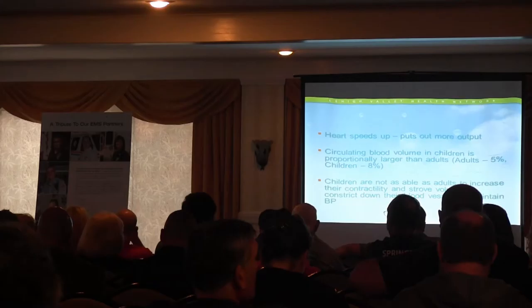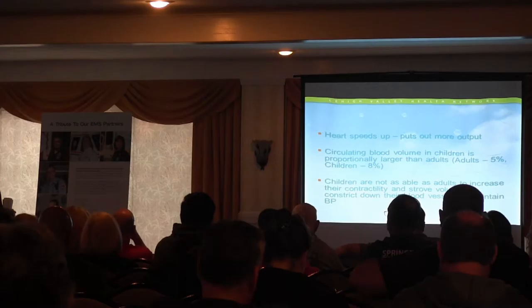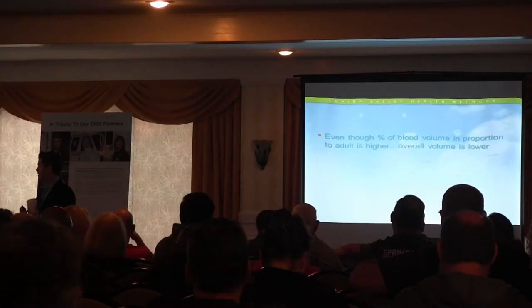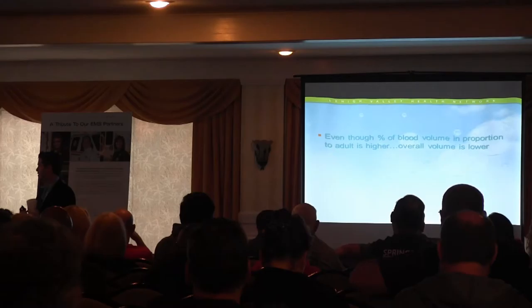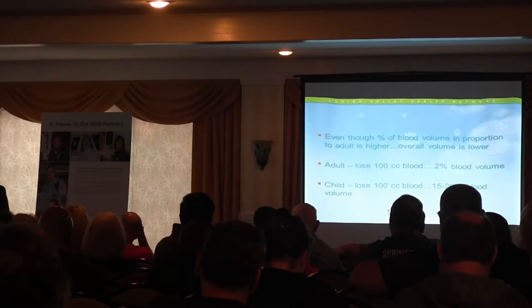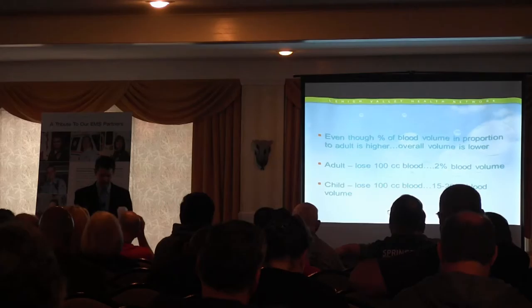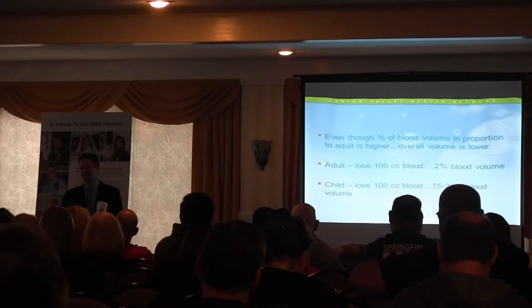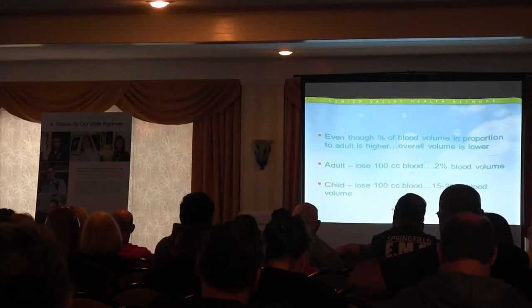In adults, blood pressure can be maintained through vasoconstriction even with some blood loss, but kids can't do that as easily. Also, even though kids have a higher blood volume percentage, the absolute volume is small. If an adult loses 100 cc of blood that's about 2% of their blood volume, but if a kid loses 100 cc that can be almost 20% of their blood volume. So the same absolute loss is far more devastating in a child.